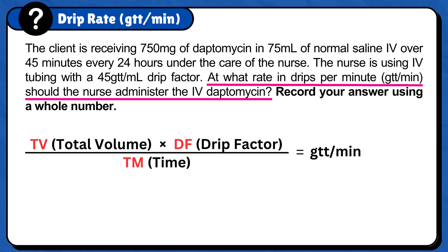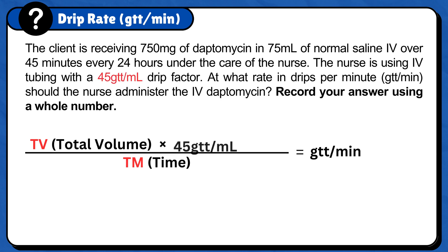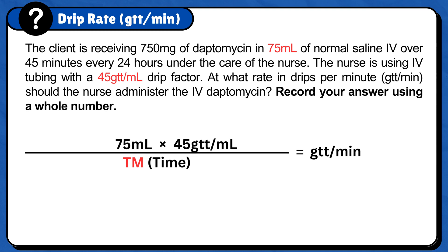Now that the formula is ready, we need to plug in the numbers. Start with the drip factor because it is usually given to you — for this problem it is 45 gtt per milliliter. For total volume, plug in the doctor's order in volume, which is 75 milliliters. And for time, plug in the time that will take for the prescription to be administered, which is 45 minutes. Since everything is in the right units, like milliliters and minutes, no conversions are needed.